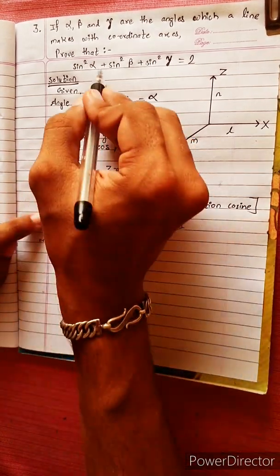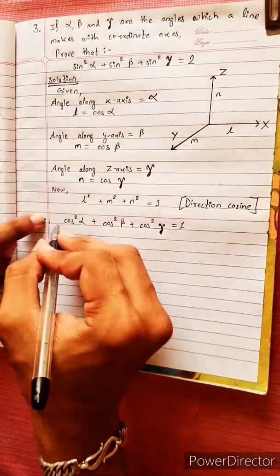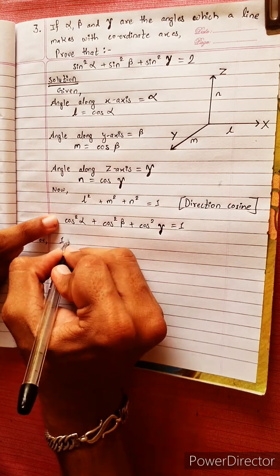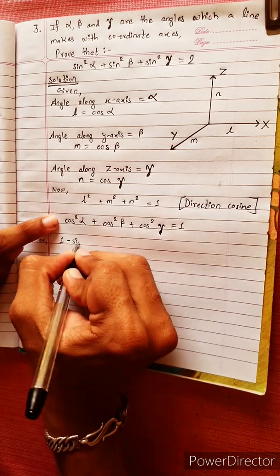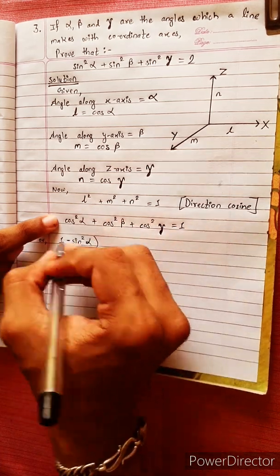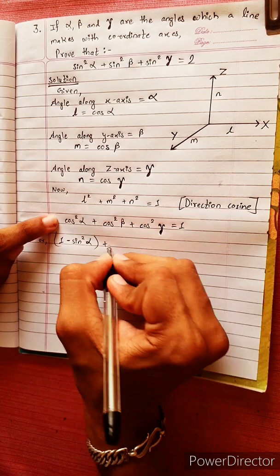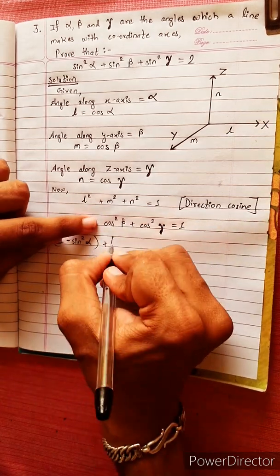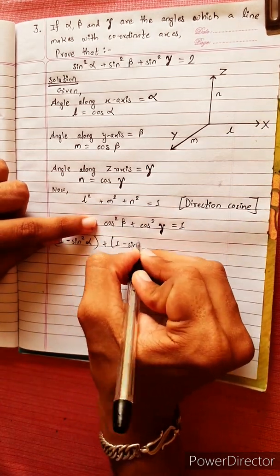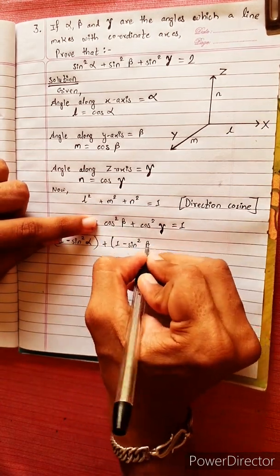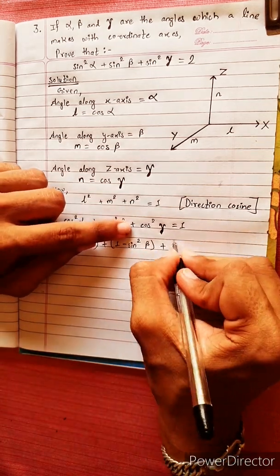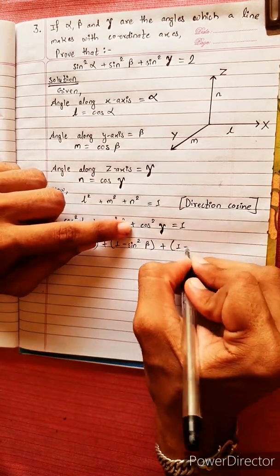We use the identity cos²θ = 1 - sin²θ. So we substitute: (1 - sin²α) + cos²β, which becomes (1 - sin²β), plus cos²γ, which becomes (1 - sin²γ), and the whole expression equals 1.